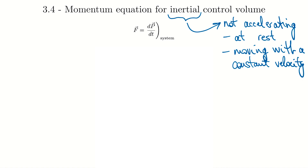In an upcoming section we'll look at accelerating control volumes and see why we treat those differently — essentially there's just an extra term in the equation. For now we're looking at the inertial ones. The force balances for inertial control volumes apply to things like pipe fittings or a fire hose, because they're non-accelerating. Versus accelerating frames — something like a rocket blasting off from Earth — which we consider in a separate section.